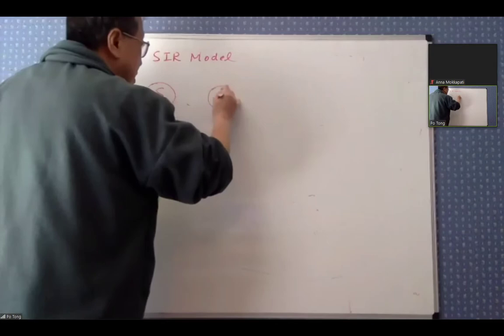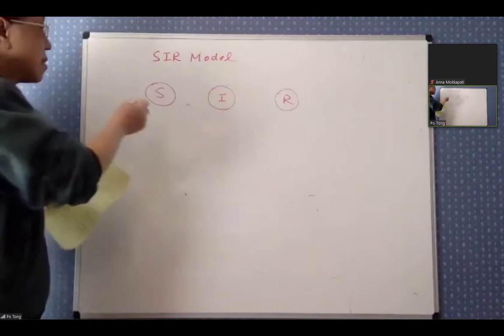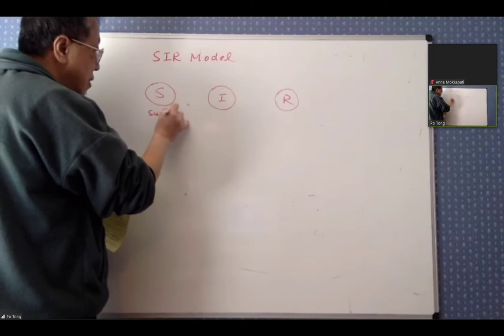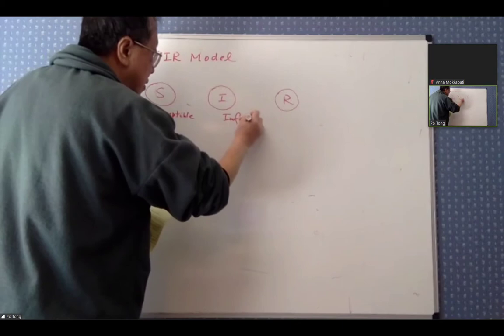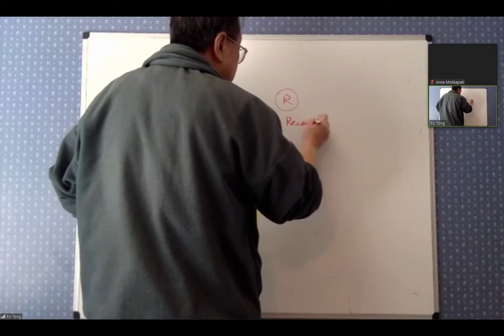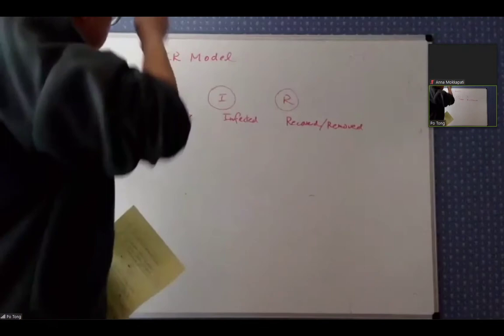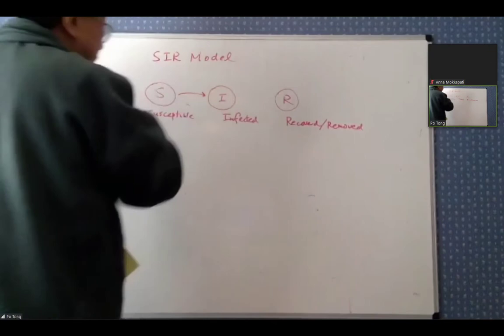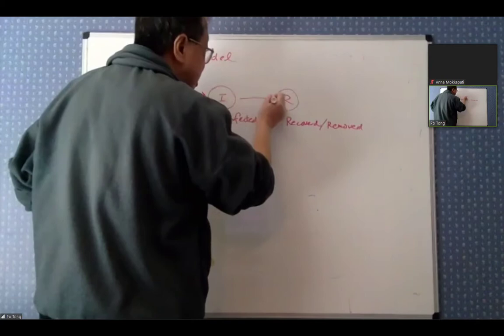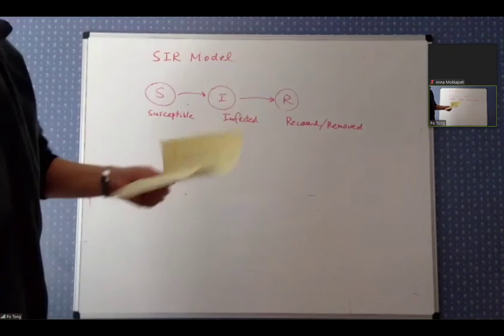The SIR model has three different states. S stands for susceptible, I stands for infected, R stands for recovered or removed — and removed basically means the person died. From susceptible you can go to the infected state, and from infected you can either recover or a small percentage die — currently some people say one percent, some say three percent.